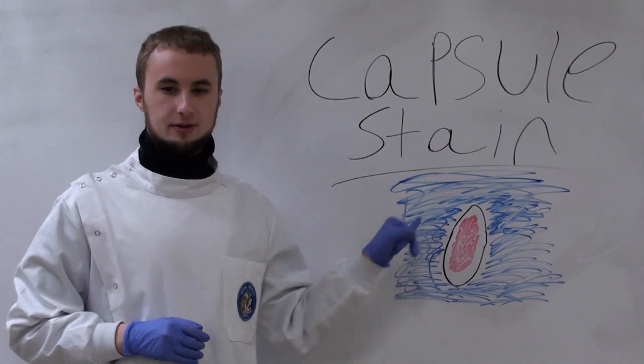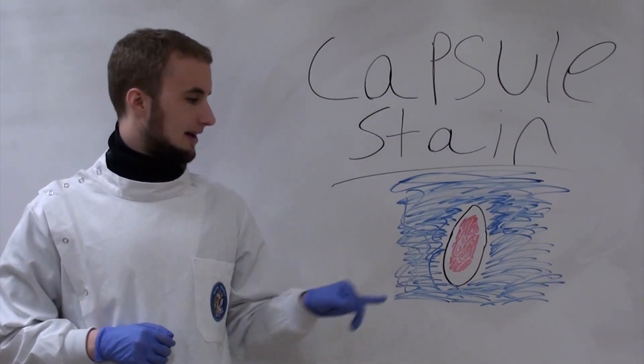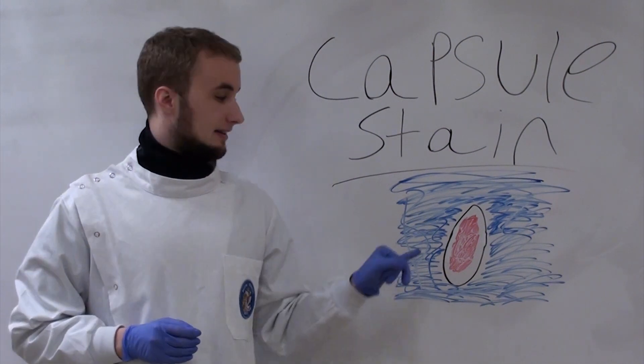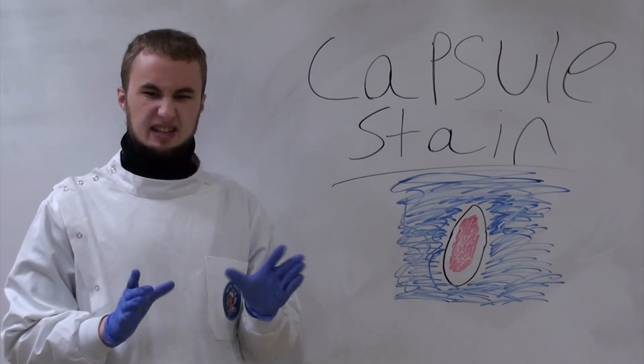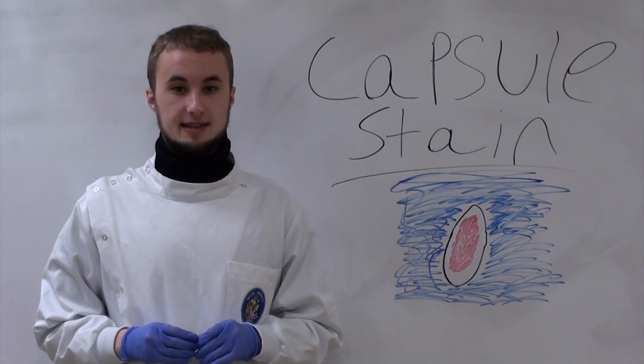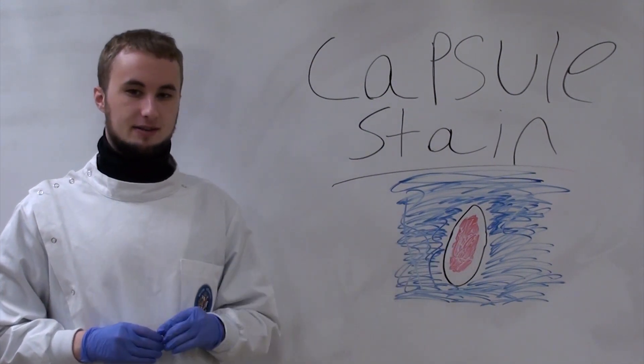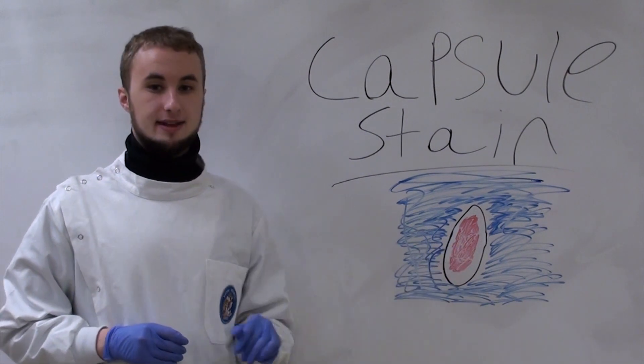Now you're probably wondering why is there a white area around the cell? Well that's because it's a non-ionic gelatinous layer. Basically, this little jelly coating does not interact with our stains at all. So the negative stain is repulsed by the bacteria's negative charge while the positive stain is attractive.